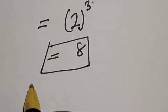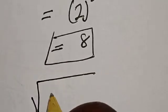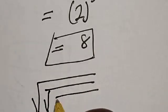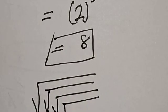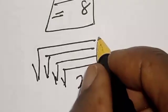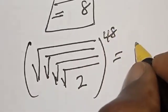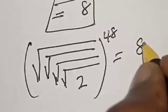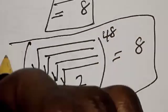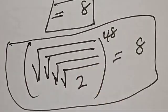Therefore, root of root of root of root of root 2 raised to power 48 is equal to 8. So if you enjoyed the class, please don't forget to like, share, comment, and subscribe. Thank you.